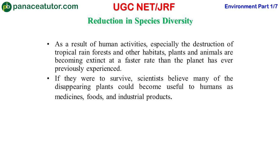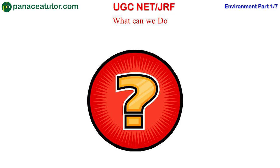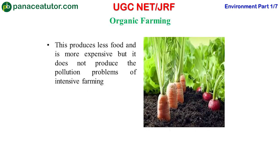Scientists believe that many of the disappearing plants could become useful to humans as medicines, foods, and industrial products. These are all the factors responsible for environment loss. To maintain a balance in our environment, we should use alternative methods. For example, organic farming — this method is costly but it does not cause pollution problems. Instead of using excessive fertilizers which pollute the soil, organic farming uses manure, which avoids the pollution problem.